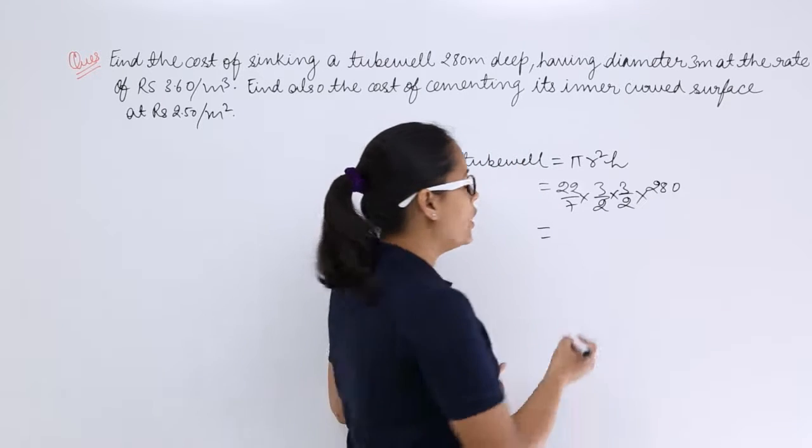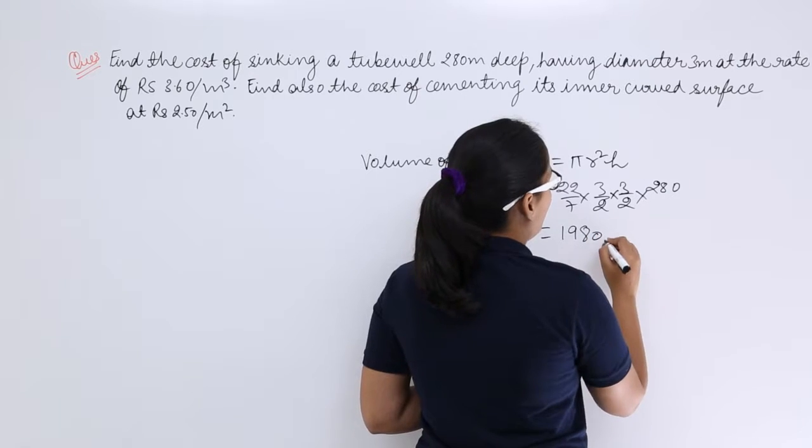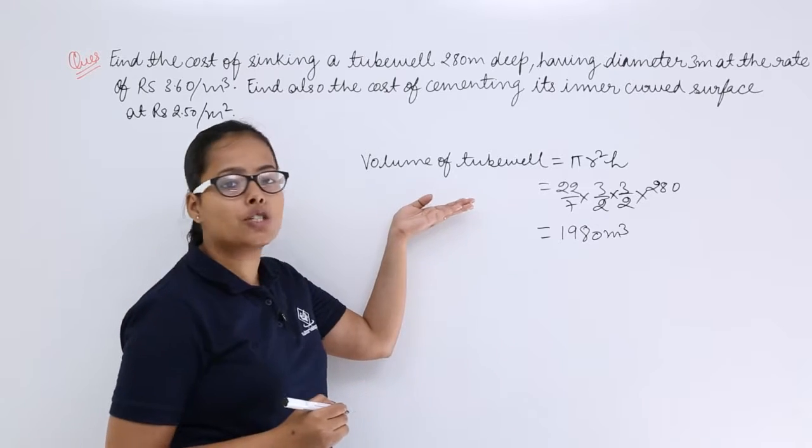So when you'll evaluate this, what you'll get? You'll get 1980 meter cube. So this is going to be the volume of this tube well.